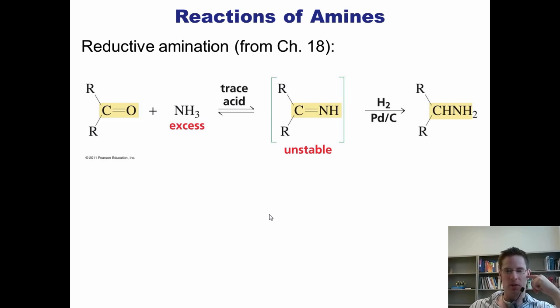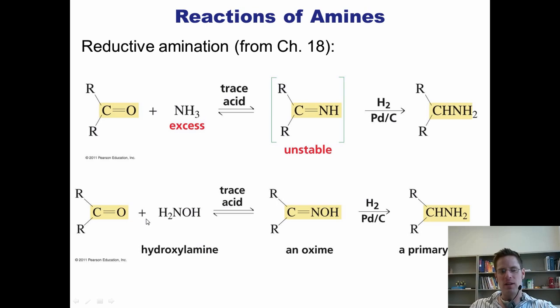As shown here, imines can be converted to primary amines by being treated with hydrogen gas and palladium carbon. Thus, if I take carbonyl compound, either an aldehyde or a ketone, treat it with a primary amine or ammonia, I get this imine, which can then be treated with hydrogen gas and palladium carbon to generate this primary amine exclusively as product. Similarly, I can take an aldehyde or ketone and treat it with an hydroxyl amine and trace acid to generate this compound, which looks just like an imine except it's got an OH attached to the nitrogen. This type of compound is called an oxime. An oxime can also be treated with hydrogen gas and palladium carbon to generate a primary amine. Now, this reaction sequence is called reductive amination, which we introduced to you back in Chapter 18.